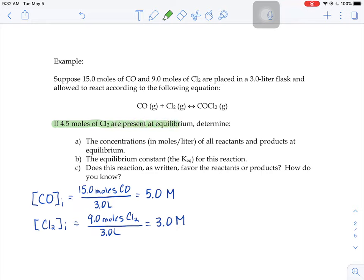And then underneath the balanced equation, it tells you right here, there's 4.5 moles of chlorine present at equilibrium. So chlorine at equilibrium equals 4.5 moles over that same 3 liter flask. We're not changing the size of the container that it's in. So the molarity of that chlorine at equilibrium is 1.5 molar.